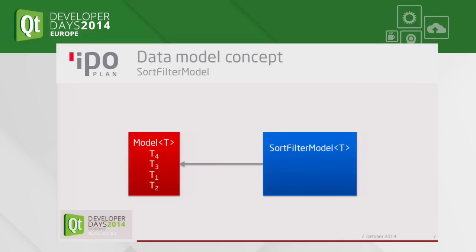Let's start with the sort filter model. The sort filter model has a source model with unsorted objects or instances of type T. We want to sort them, so for example we set ascending index order and filter indices smaller than 4. This gives us the result we want for the GUI.